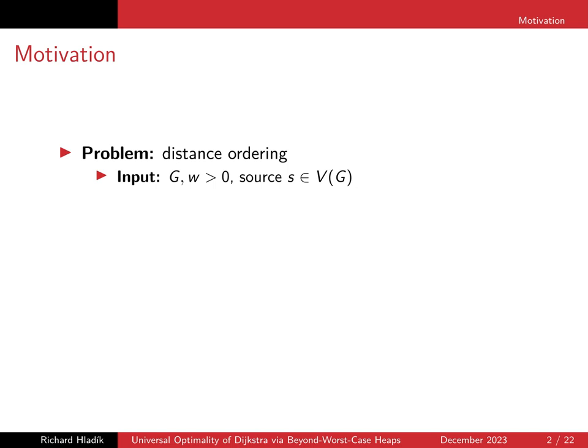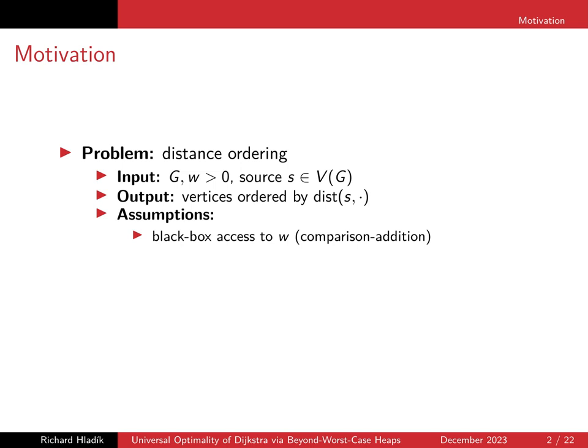Consider the following problem. We are given a graph with some positive weights and some source vertex s, and we want to order the vertices of this graph by the distance from s. What's important is that we only have black-box access to the weights, so we can only add them and compare them. We can imagine that weights are real numbers, but we can't ask for the fifth bit of a real number or anything like that. We also assume that the graph is connected.